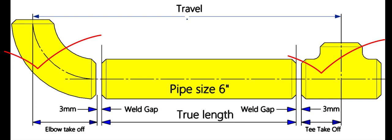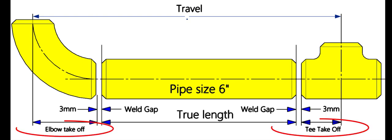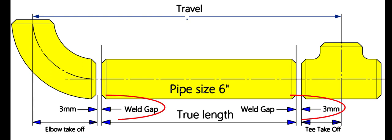To calculate the true length of the pipe, we need to know three things: the travel length, the takeoff length of the fittings, and the weld gap or the joint root gap.